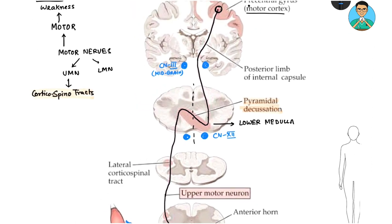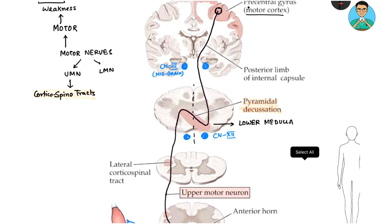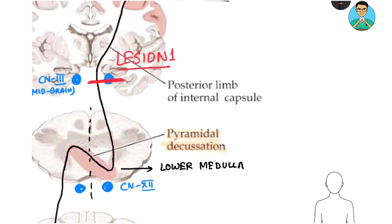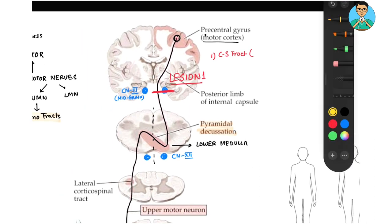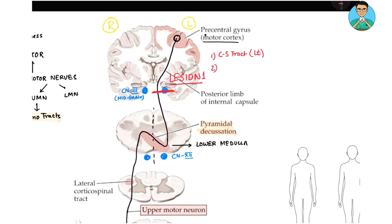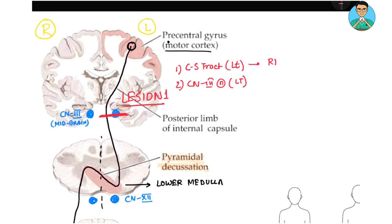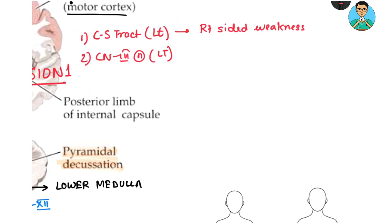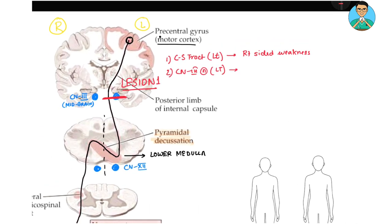Let us consider lesion one, which is at the level of the midbrain. Suppose the right side is here and the left side is here. The damage is to the left-sided corticospinal tract and the left-sided cranial nerve 3 nucleus. This leads to right-sided weakness, because the left corticospinal tract crosses at the pyramidal decussation and supplies the muscles of the right side.